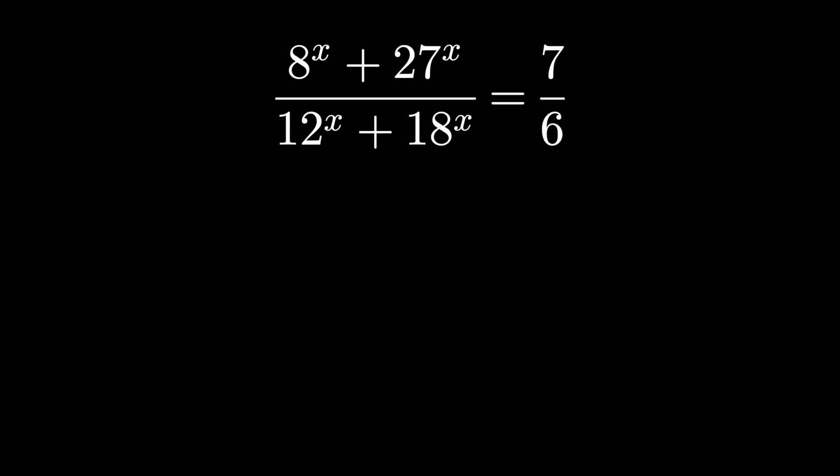That is, 8 is 2 cubed, 27 is 3 cubed, 12 is 2 squared times 3, and 18 is 2 times 3 squared.